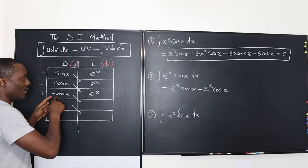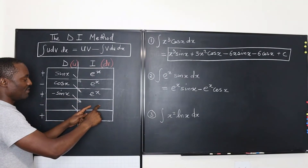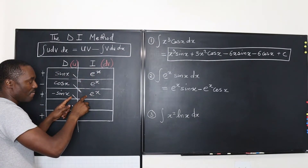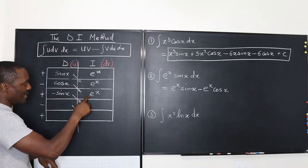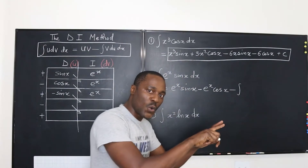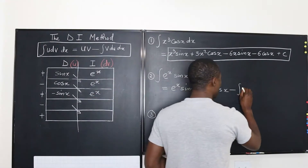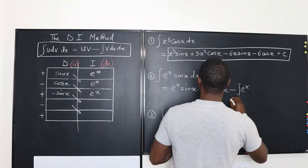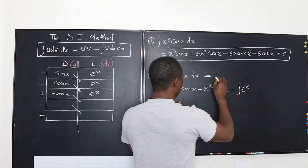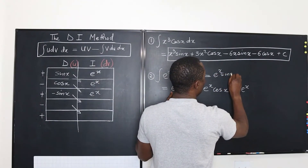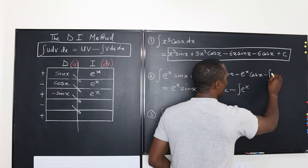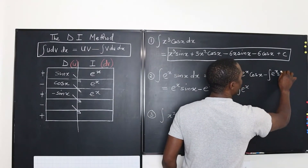Then you go to the third line. You can't keep going because you already found something that looks like the first line. So you stop here and multiply this line — this gives negative E to the X sine X. So it will be minus the integral. Remember: when you go horizontally, you must integrate — the integral of E to the X sine X dx.